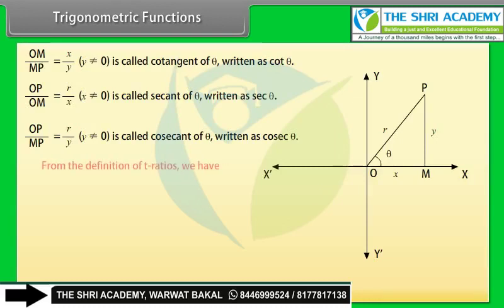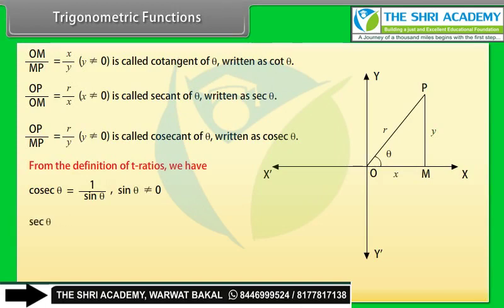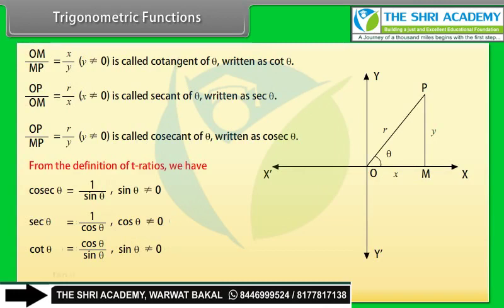From the definition of T-ratios: cosec θ = 1/sin θ (sin θ ≠ 0); sec θ = 1/cos θ (cos θ ≠ 0); cot θ = cos θ/sin θ (sin θ ≠ 0); tan θ = sin θ/cos θ (cos θ ≠ 0).